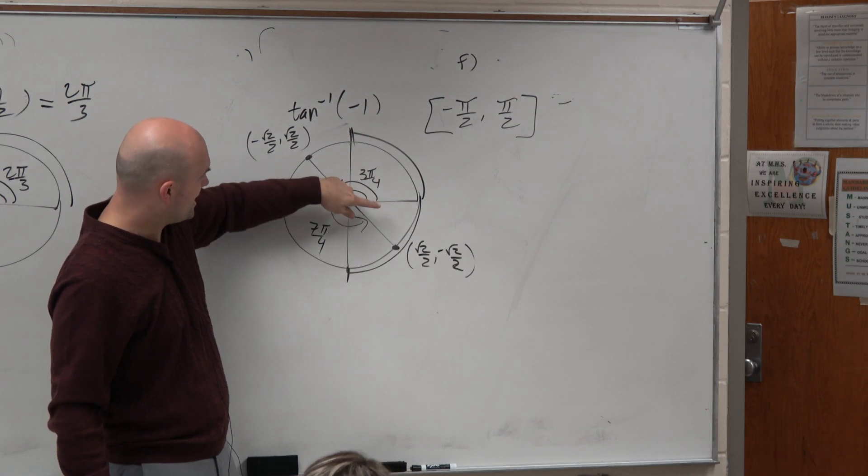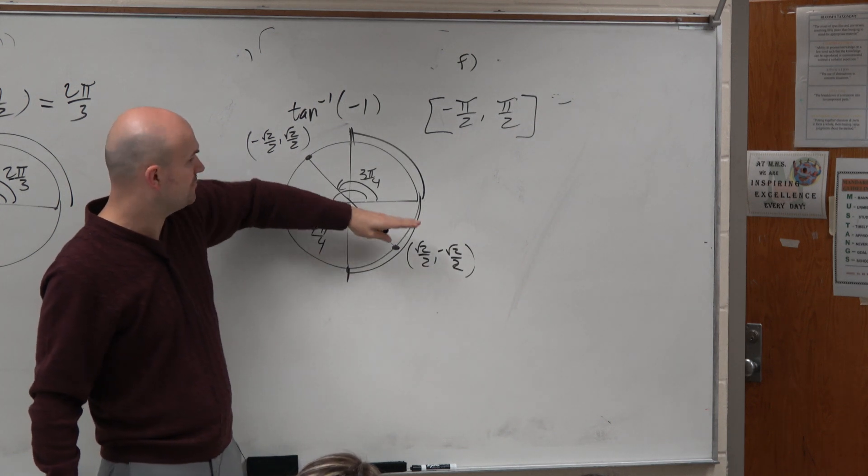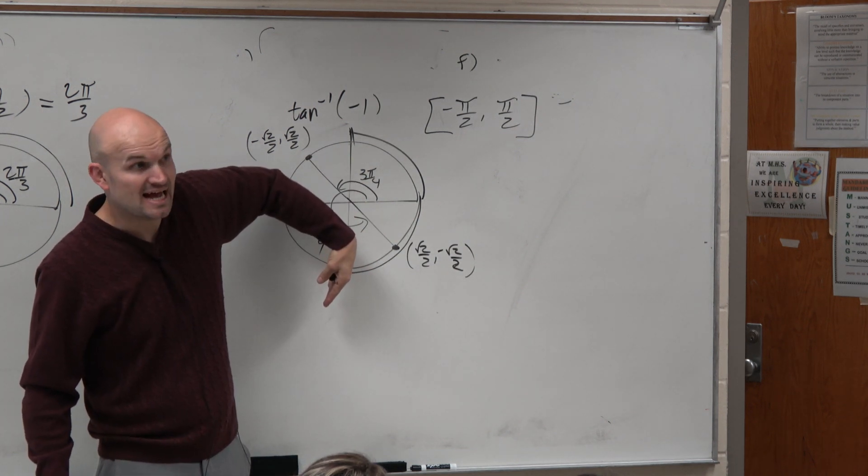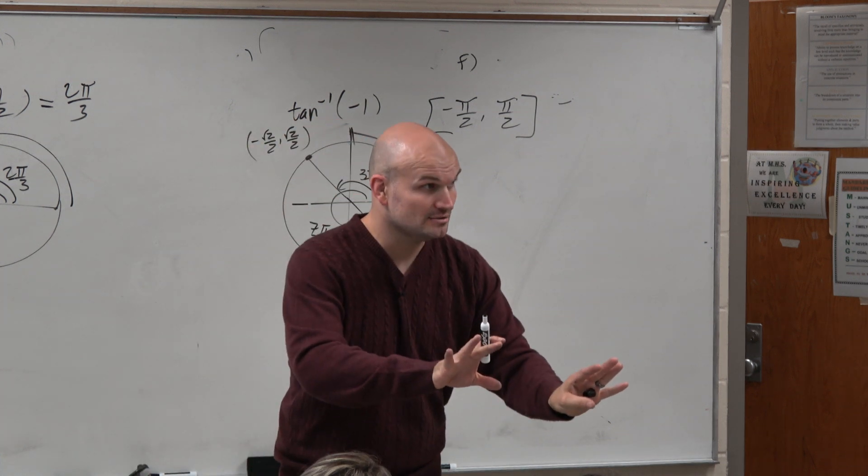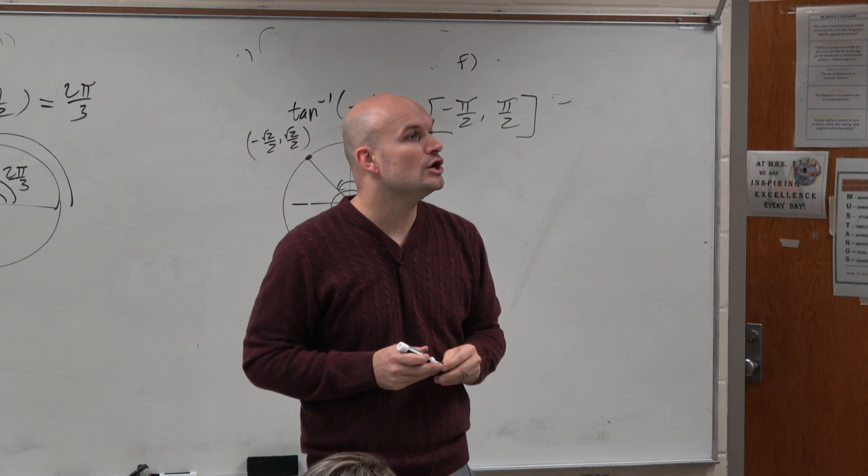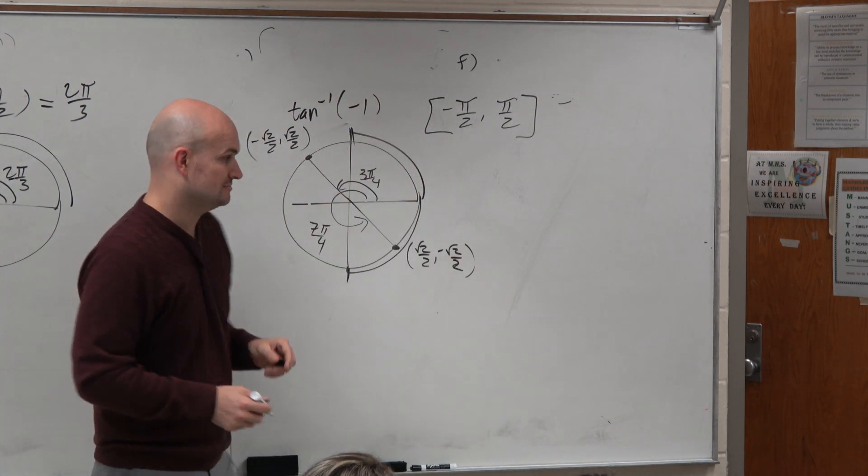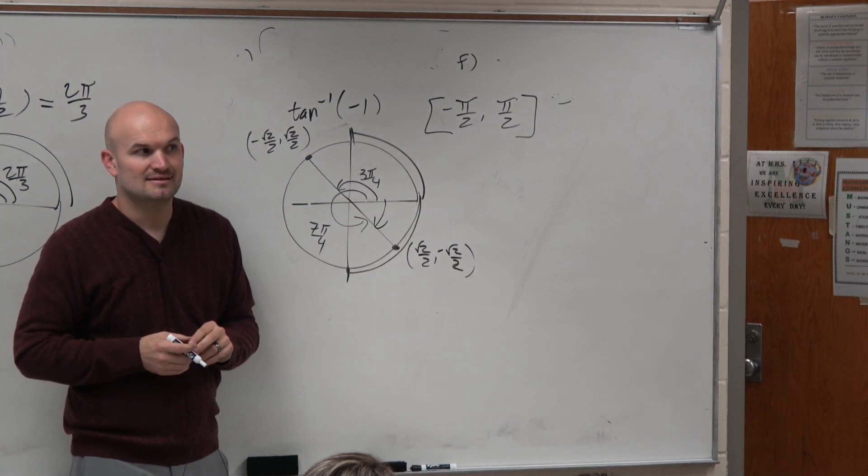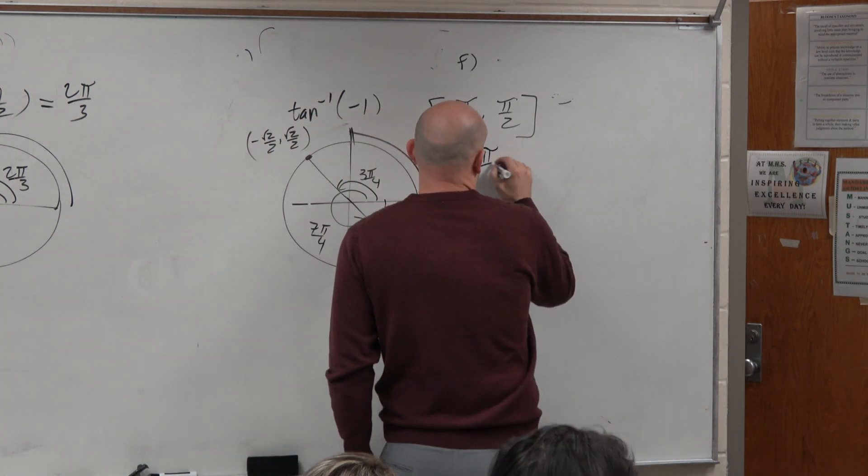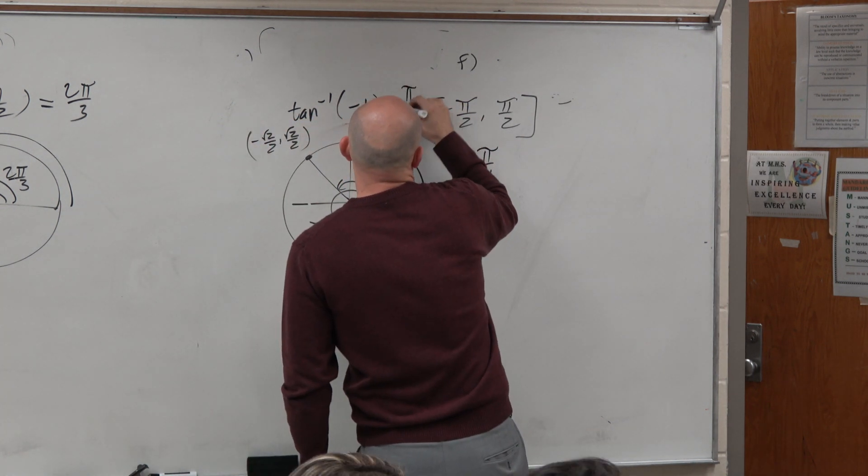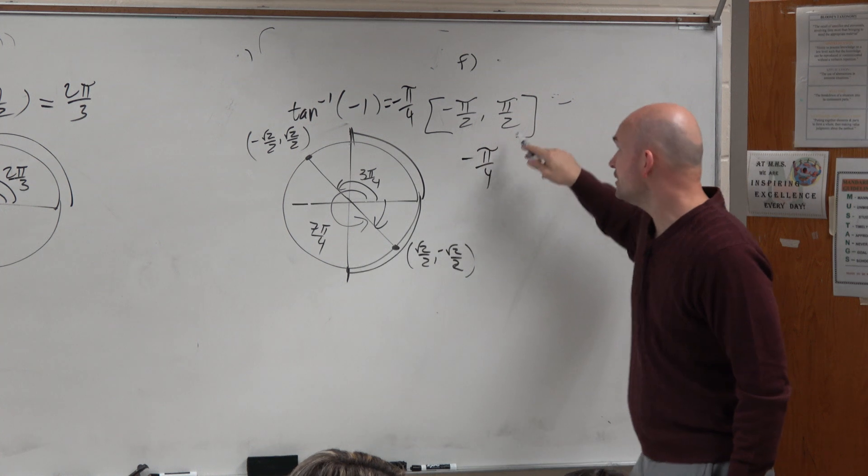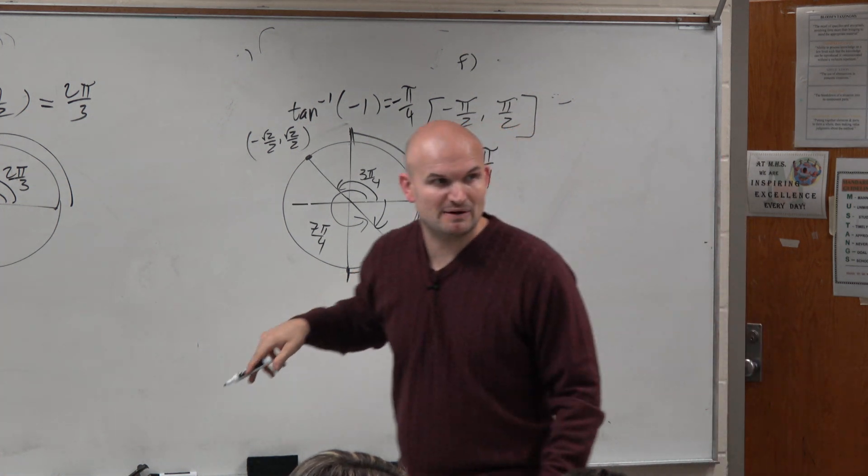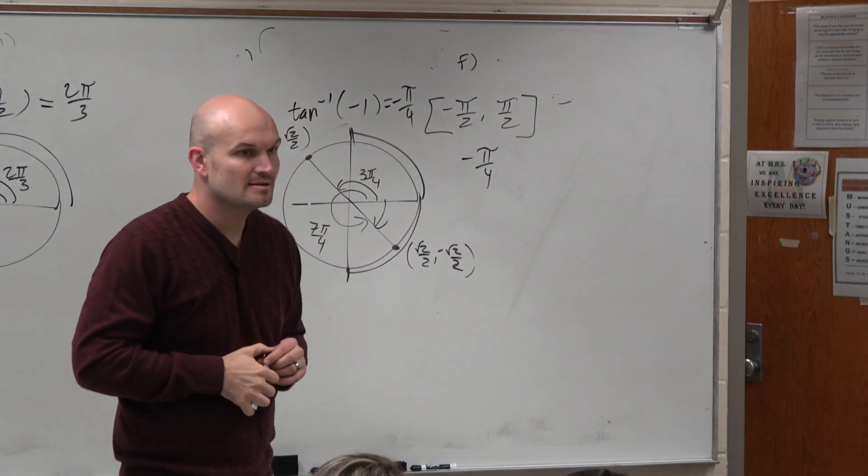Does 7 pi over 4 land within the restriction of pi halves to negative pi halves? Yes. I can't use that angle. But could I maybe use a coterminal angle? Not pi over 4, but negative pi over 4. Is negative pi over 4 between negative pi halves and pi halves? Yes.